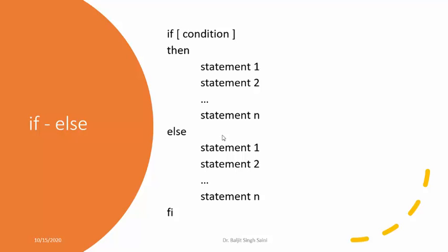The general syntax is: if — remember that there is a space before the square bracket as well as after the square bracket. So: if, space, open bracket, space, and then you write the condition. Once you have written the condition, you again need to give a space and then close the bracket. Always remember to give space on both sides of the first bracket and before closing the second bracket.